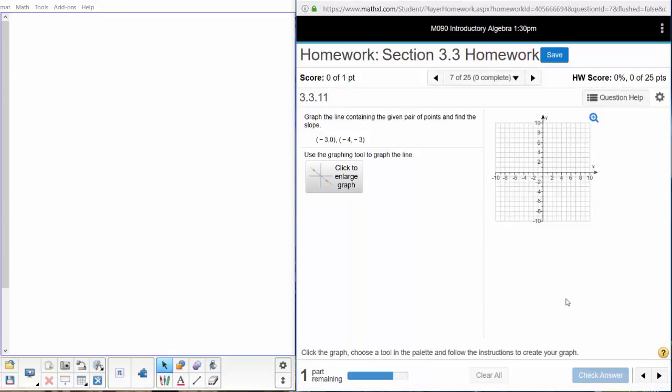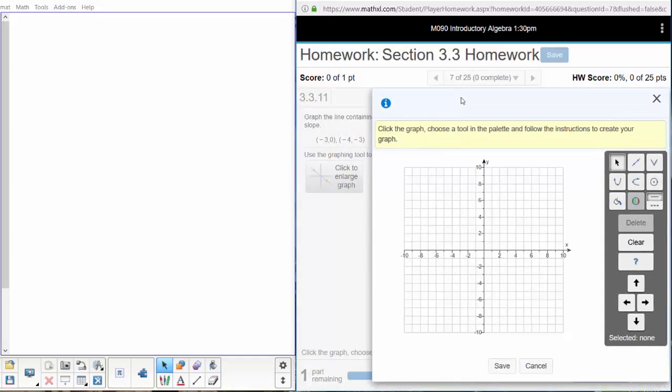Alright, another question. We want to graph the line containing the given pair of points and find the slope. In order to graph these again, what needs to happen? We can click to enlarge it—it doesn't have to happen over here on that small graph. We can scoot it to the side so I can see those points. We can always move that window around.